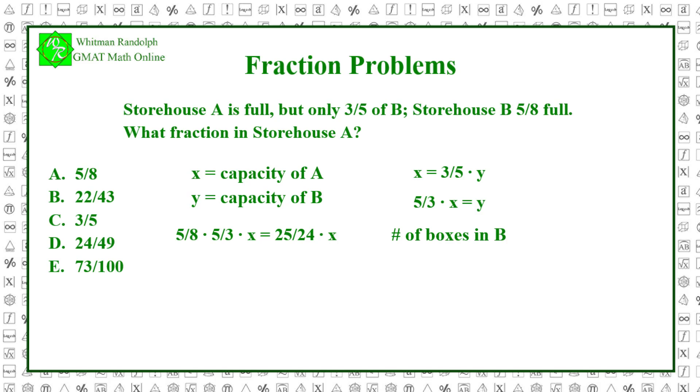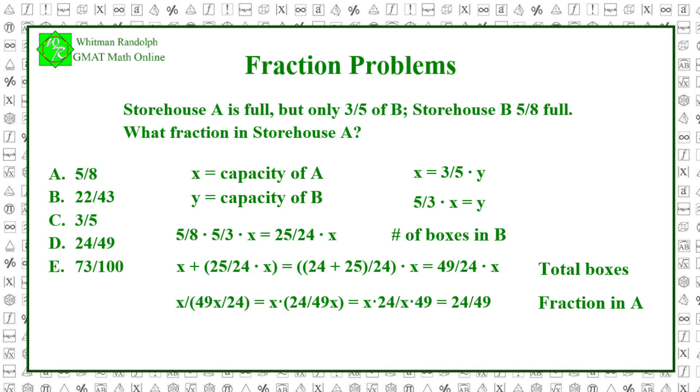So, the total number of boxes currently stored in A and B together is the sum of x and what's currently in storehouse B. That is x plus twenty-five twenty-fourths times x, which equals twenty-four plus twenty-five over twenty-four times x. And that equals forty-nine over twenty-four times x. The fraction of that total that is in storehouse A is computed by dividing x by the total. That is x over forty-nine x divided by twenty-four, which equals x times twenty-four over forty-nine x, which equals x times twenty-four over x times forty-nine, and that equals twenty-four over forty-nine.